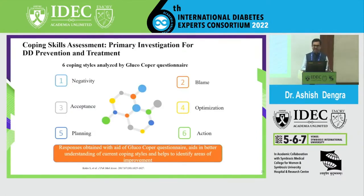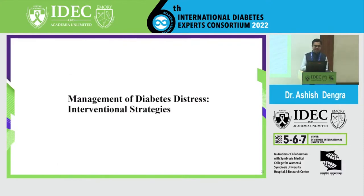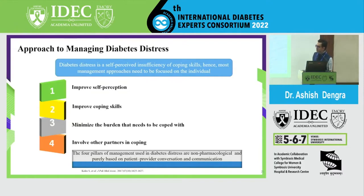Coping skills assessment is the primary investigation for DD prevention and treatment. Six coping styles are analyzed by the Glucocopper questionnaire: negativity, acceptance, blame, optimization, planning, and action. Management strategies are important to improve self-perception and coping skills, minimize the burden that needs to be coped with, and involve other partners in coping. Family support is very important to overcome diabetes distress. Since it is a self-perceived insufficiency of coping skills, management approaches need to be focused on the individual.